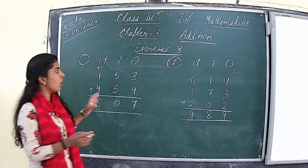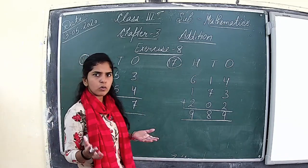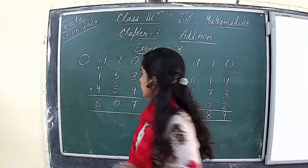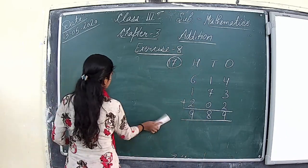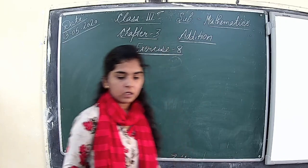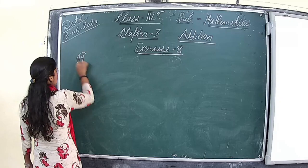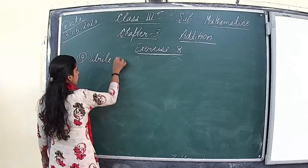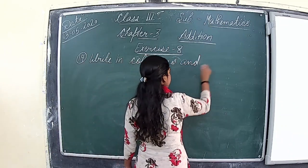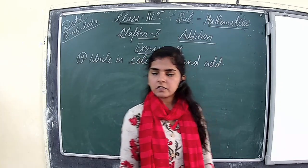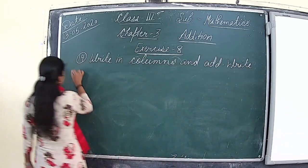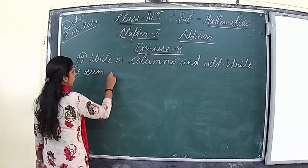I hope you all are able to solve these kinds of questions and you all know how to add numbers. So let us see the next question — question number 19: Write in columns and add. Write the sum in words. What is sum? Sum is the result of addition.